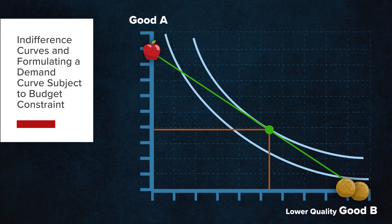In other words, the consumer can yield more satisfaction by combining fewer amounts of good A with greater amounts of the lower quality good B.